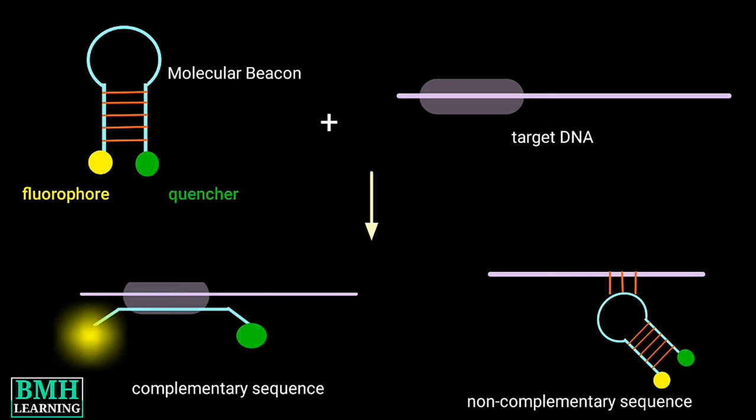The quencher dye is in close proximity with the fluorescent molecule. Due to this, the fluorophore cannot emit fluorescence.